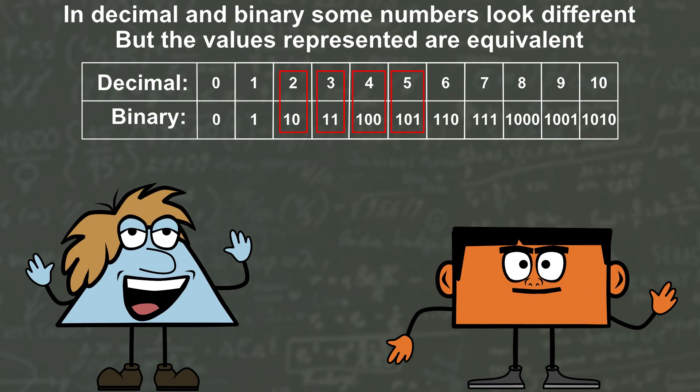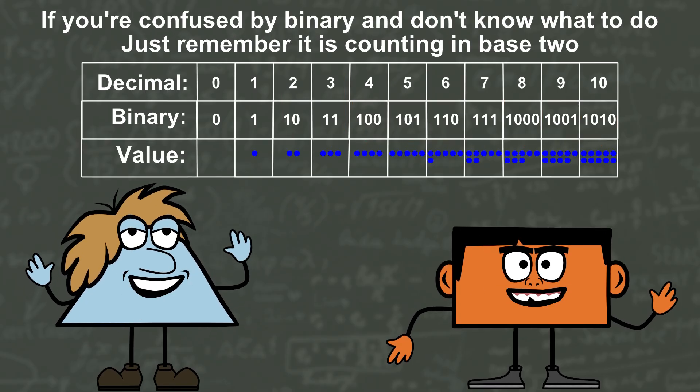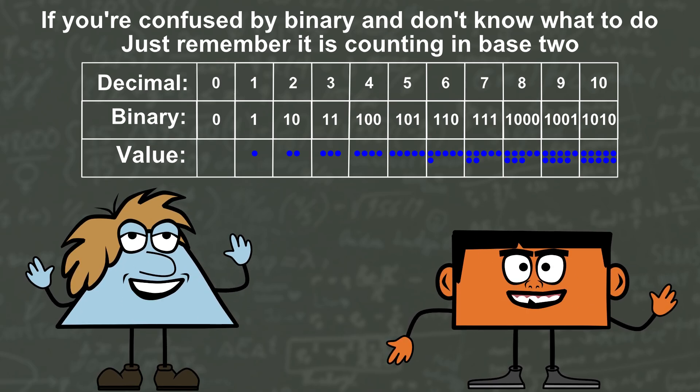In decimal and binary some numbers look different, but the values represented are equivalent. If you're confused by binary and don't know what to do, just remember it is counting in base 2.